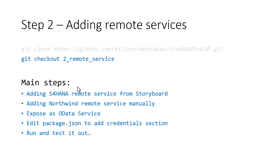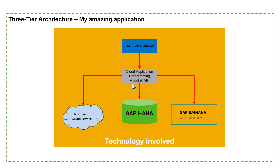If we further subdivide step two into smaller steps: we are going to add the S4 HANA remote service from the storyboard, then add the Northwind remote service manually, expose it as an OData service, and edit the package.json file. To recap, our application gets customer information from the Northwind OData service, sales order information from the SAP S4 HANA system, and we have a mapping table stored locally that connects the customer information to the sales order information.